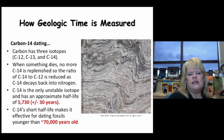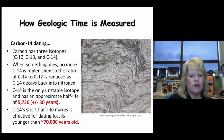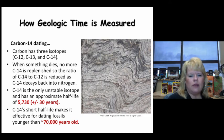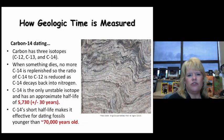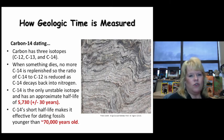Carbon-14 has three isotopes: C-12, C-13, and C-14. When something dies, no more C-14 is replenished by the atmosphere — a process driven by solar radiation. So the ratio of C-14 to C-12 is reduced as C-14 decays back into nitrogen. C-14 is the only unstable isotope of the carbon family, with an approximate half-life of 5,730 years plus or minus 30 years. That is the generally accepted isotopic half-life for carbon-14.